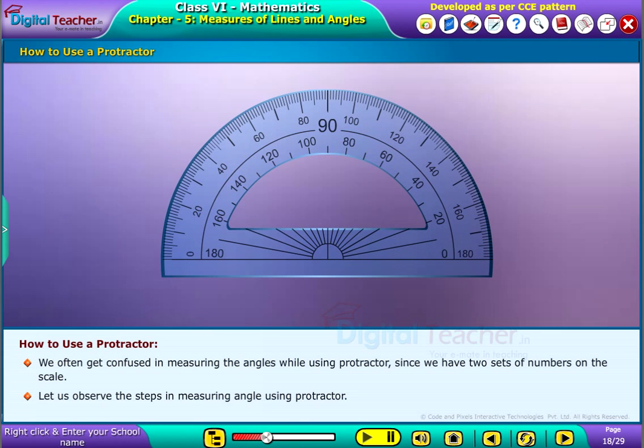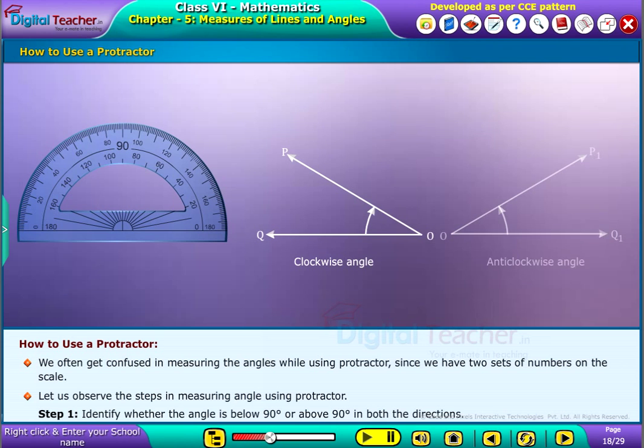Step 1: Identify whether the angle is below 90 degrees or above 90 degrees in both directions.